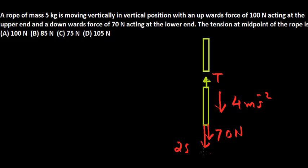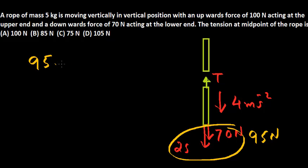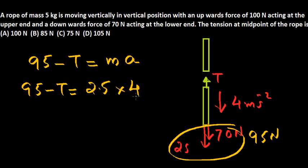So we know, if it is accelerating downward, the total downward force is 95 newton. Upward force is T. So we can say, the net force acting is 95 minus tension. And the net force is always written as M into A, F equal to M into A. So this is 95 minus T is equal to, what is mass of this portion? That is only half the mass, 2.5 into the acceleration which is 4.